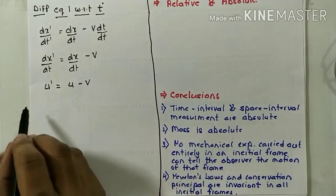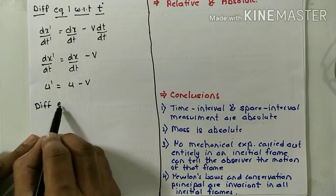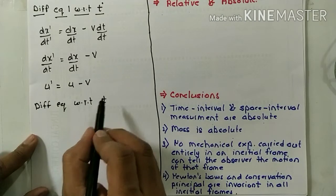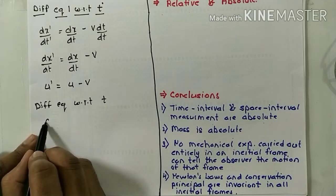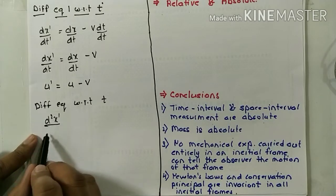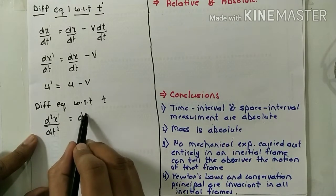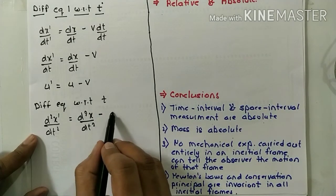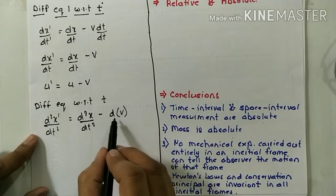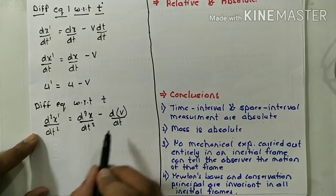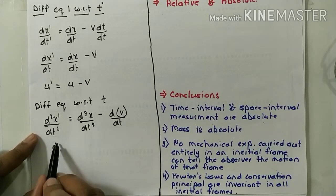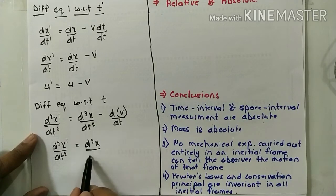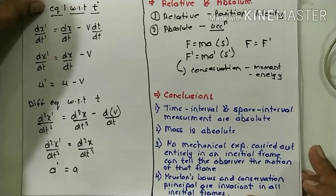Let us go further and differentiate one more time to find the relation for acceleration. So d²x-dash by dt² will equal d²x by dt² minus d of v by dt. Now v is a constant, so its differentiation is zero. That means d²x-dash by dt² equals d²x by dt² — acceleration is the same in both frames.